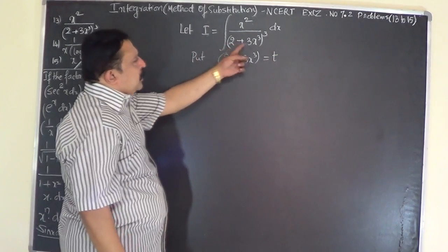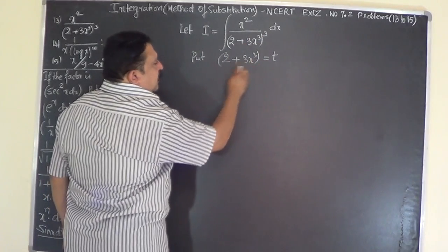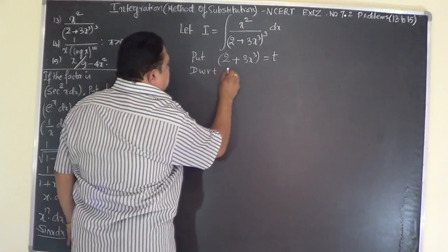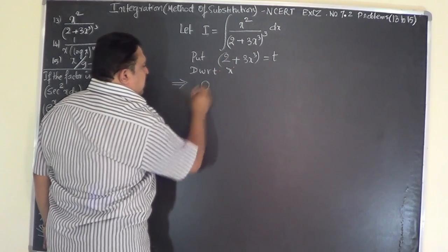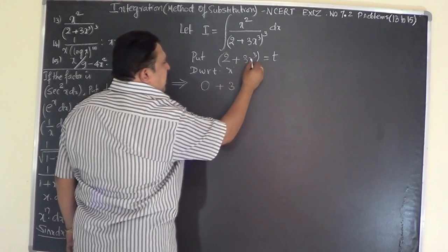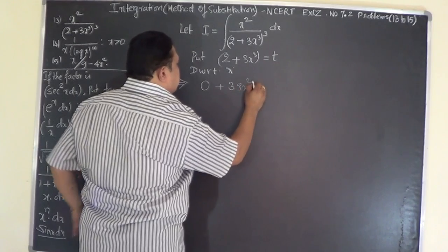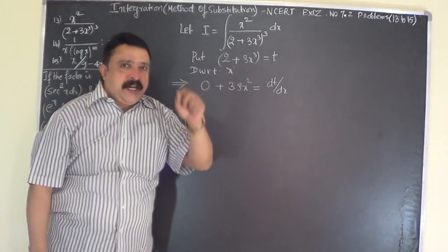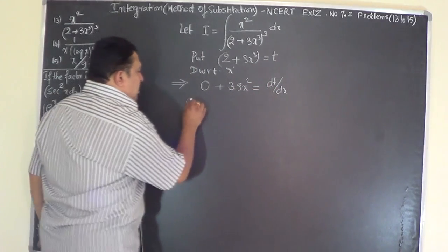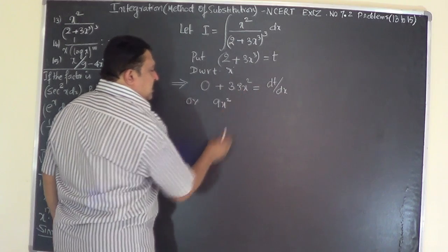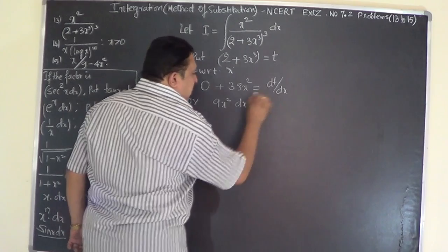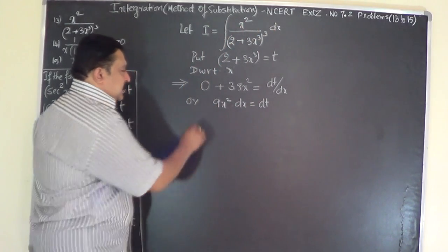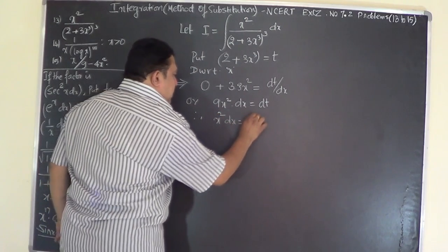There is no need to put (2 + 3x³)³ as t, because just by differentiation of (2 + 3x³) you get x² dx replaced. Put 2 + 3x³ = t. Differentiating with respect to x: the differential coefficient of 2 is 0, and differentiating x³ gives 3x², so 9x² dx = dt. Therefore, x² dx = dt/9.